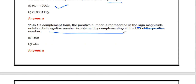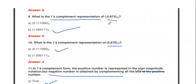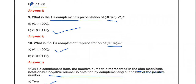In one's complement form, positive numbers are represented in sign magnitude notation, but a negative number is obtained by complementing all bits of the positive number — true. So for −0.875: first represent 0.875 as 0.1110, then take the one's complement to get 1.0001. Zeros become ones and ones become zeros.